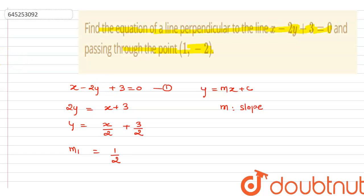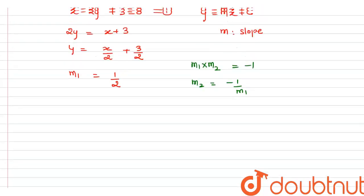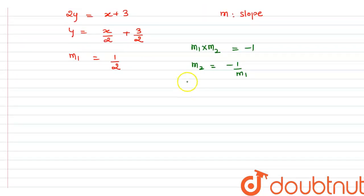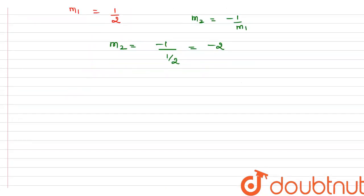Now we can get m2, the slope of the perpendicular line. We use the condition m1 times m2 equals minus 1, so m2 equals minus 1 by m1. Since m1 is 1 by 2, m2 equals minus 1 divided by 1 by 2, which gives m2 equals minus 2. The given point is (1, -2).